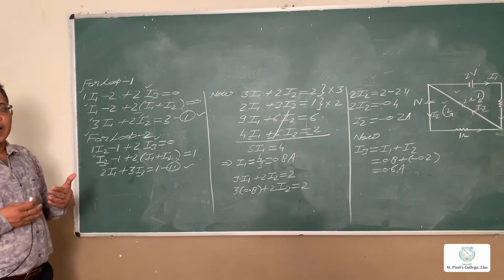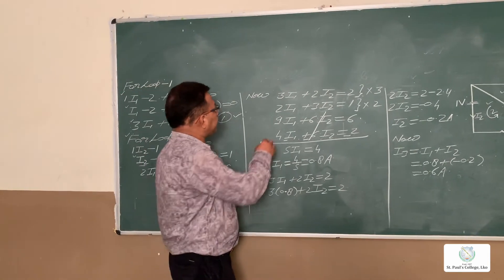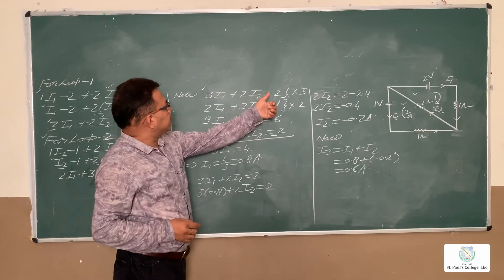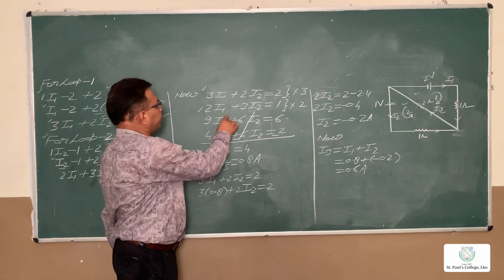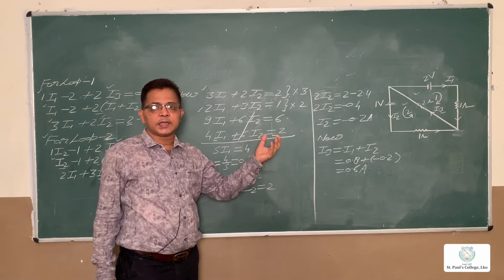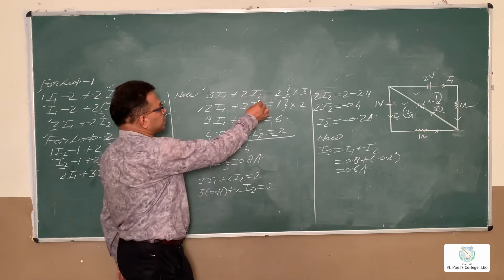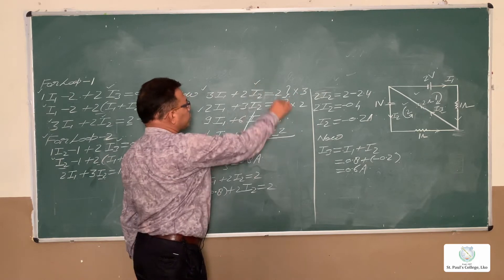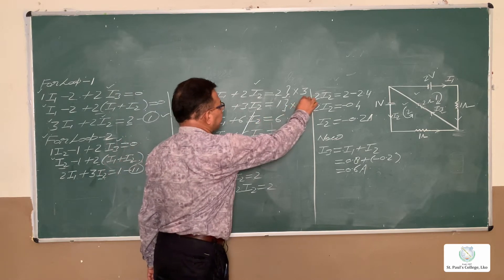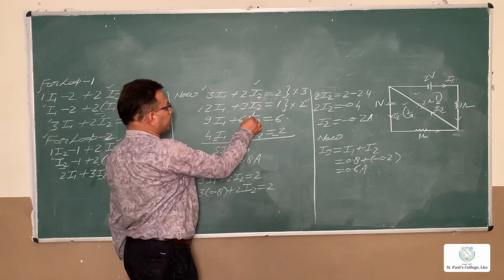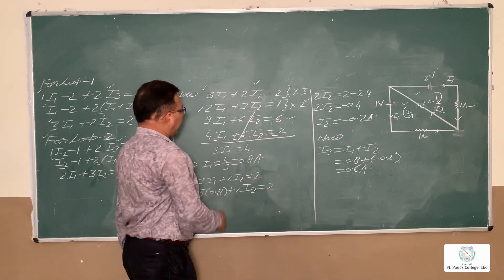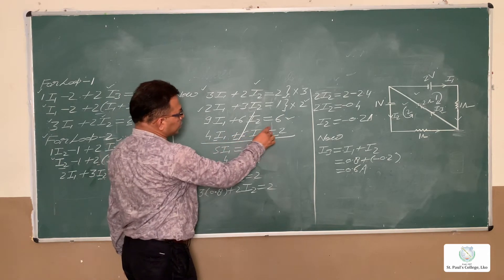We now have two equations: Equation 1 is 3·I1 plus 2·I2 equals 2, and Equation 2 is 2·I1 plus 3·I2 equals 1. To solve simultaneously, multiply Equation 1 by 3 and Equation 2 by 2, giving 9·I1 plus 6·I2 equals 6, and 4·I1 plus 6·I2 equals 2.